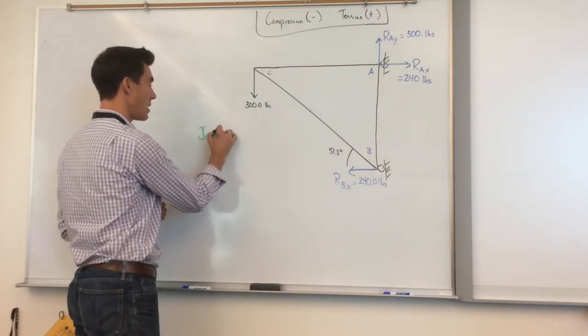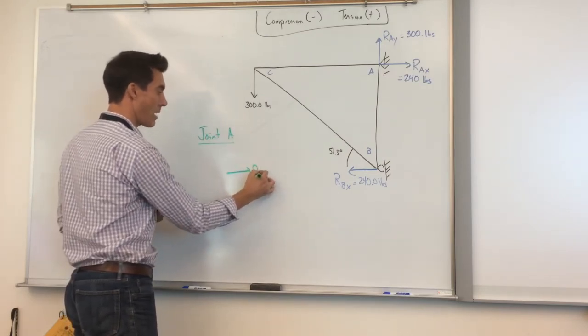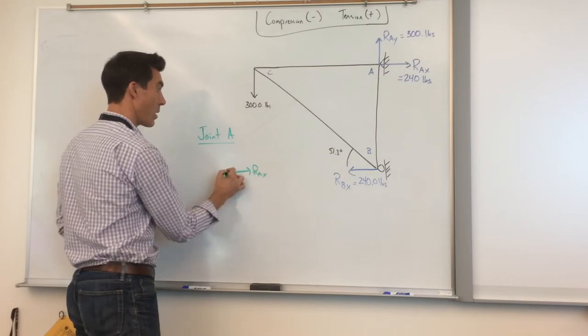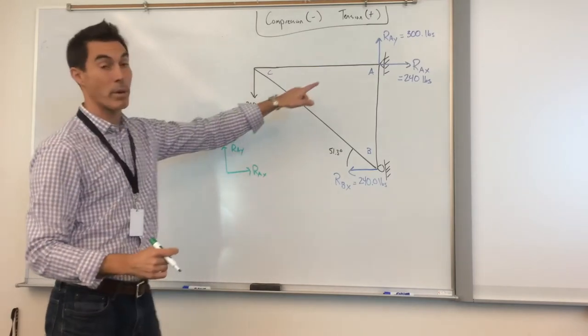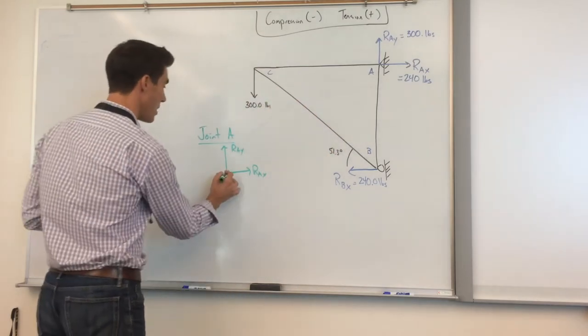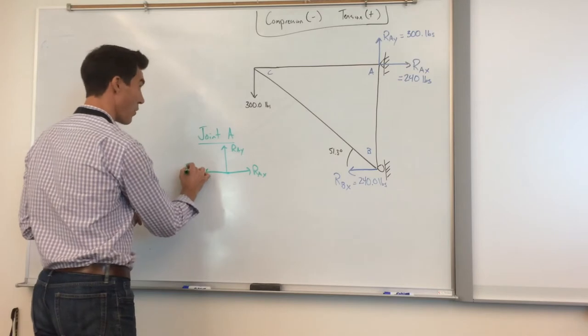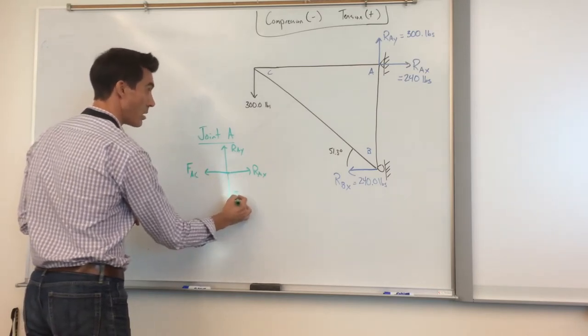So here is joint A. If we have a free body diagram at joint A, we have RAX, we have RAY, and then we have the two members. We have member AC and we have member AB. So we just draw those in. That would be the force of AC and this would be the force of AB.